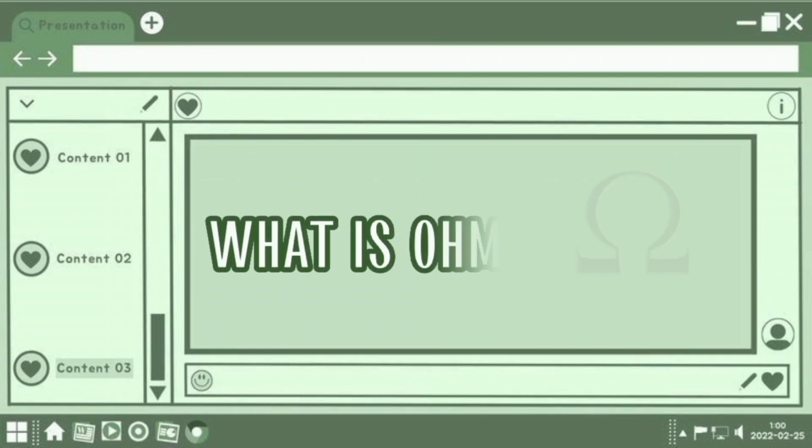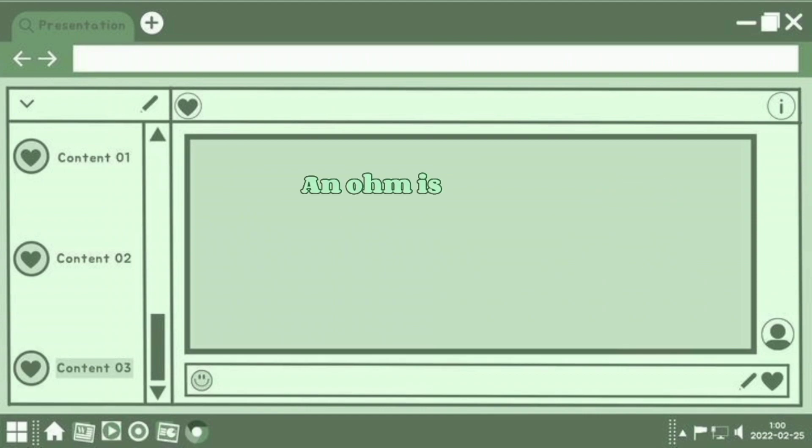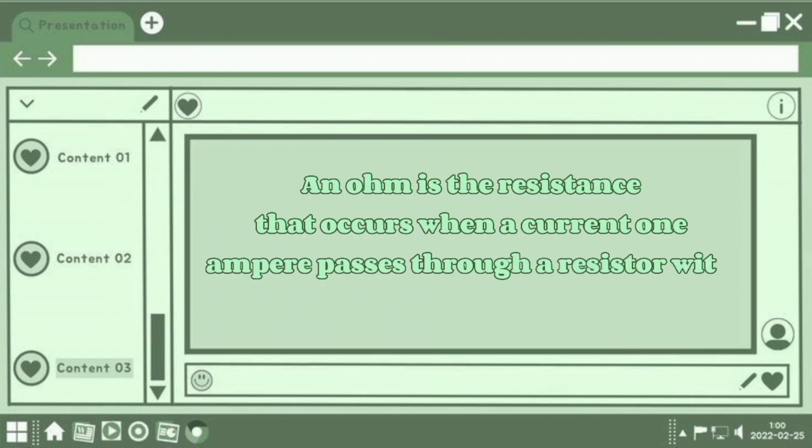What is an ohm? An ohm is the resistance that occurs when a current of 1 ampere passes through a resistor with a 1-volt drop across its terminals.